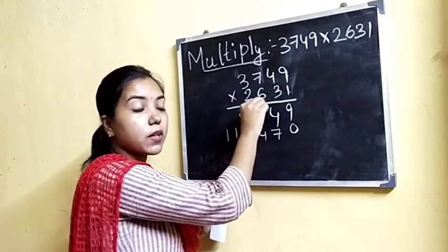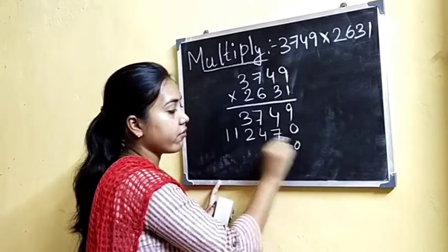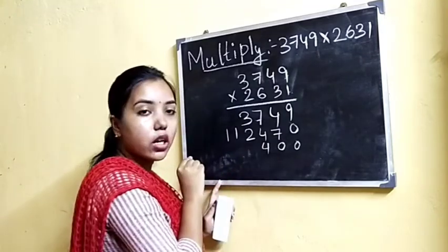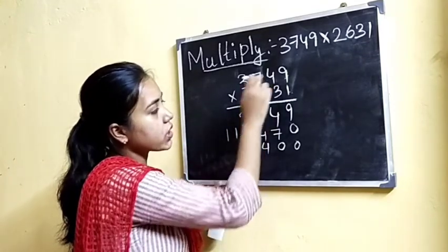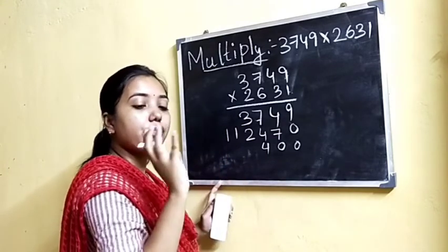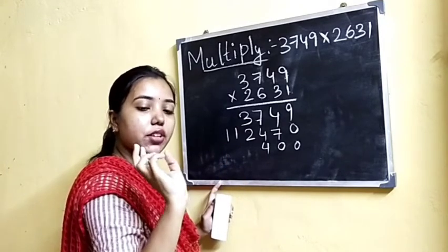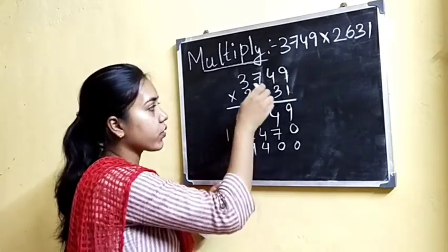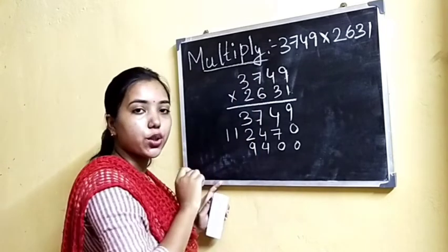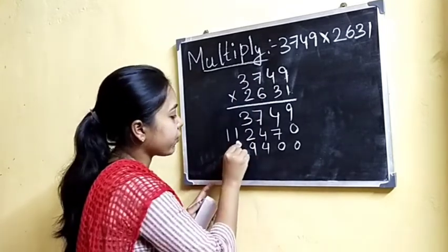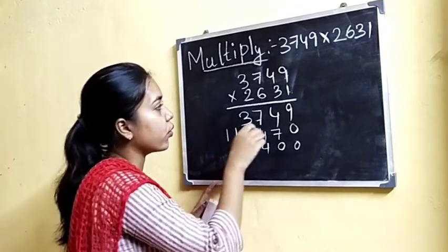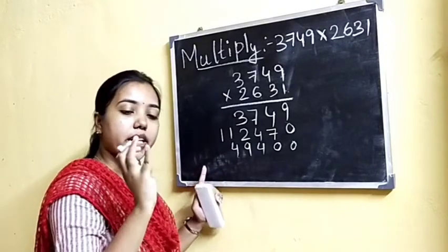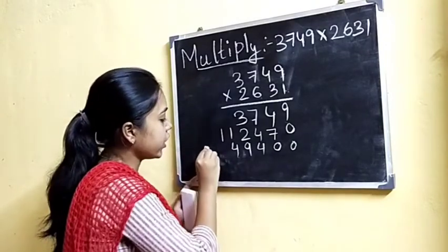Next, six is at the hundreds place, so we will put zero in the tens and ones place. Now six nines are fifty-four — write four, carry five. Six fours are twenty-four, twenty-four plus five is twenty-nine — write nine, carry two. Six sevens are forty-two, forty-two plus two is forty-four — write four, carry four. Three sixes are eighteen, eighteen plus four is twenty-two — write twenty-two.